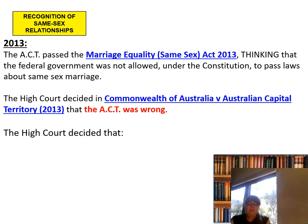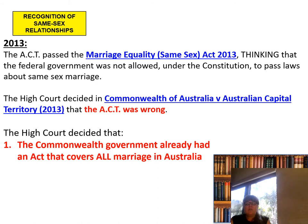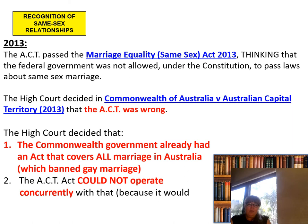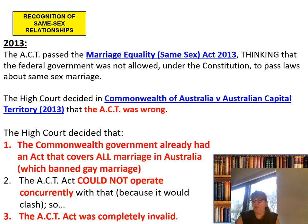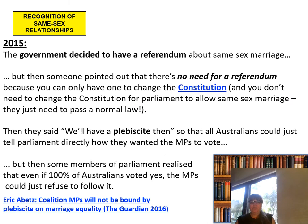What the High Court decided was that the Commonwealth government already had an act that covers all marriages in Australia, which banned gay marriage because it had the wording 'marriage between a man and a woman.' They also found that the ACT could not operate concurrently with that law — the ACT's law about same-sex marriage couldn't coexist with the federal law which said no gay marriage, because they would clash. So the ACT Act was deemed completely invalid.